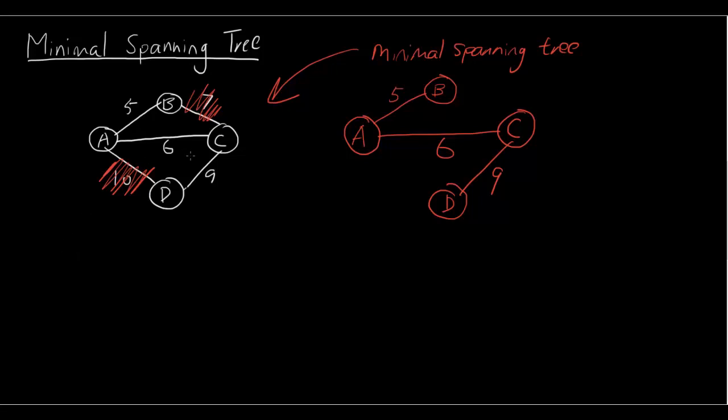Now, why do we do that? Because if you look at my minimal spanning tree you can get to a node from any other node in this network. So for example, if you're standing at B and you want to get to D there is a way for you to get there.